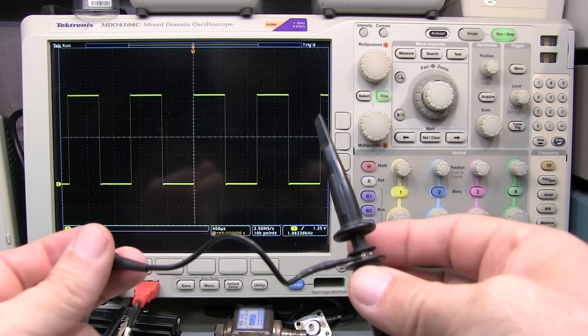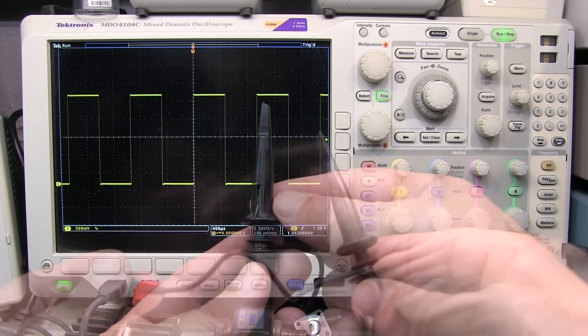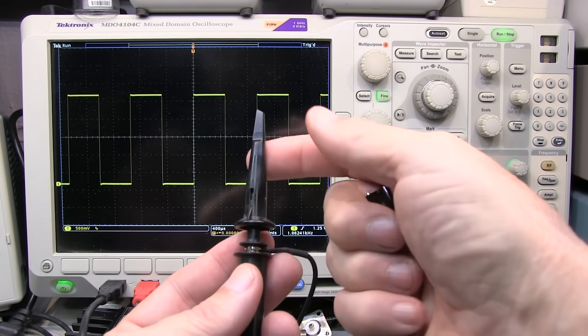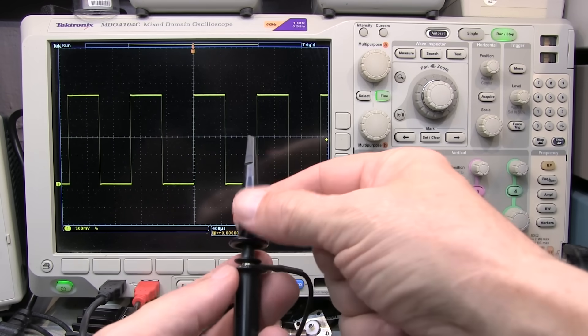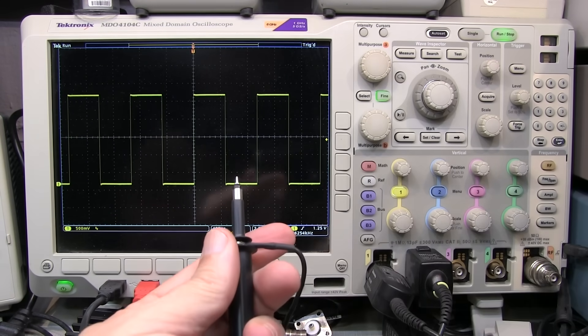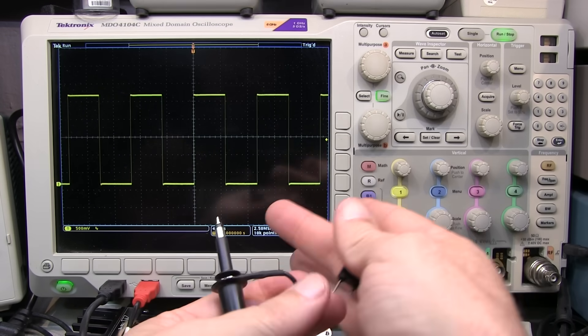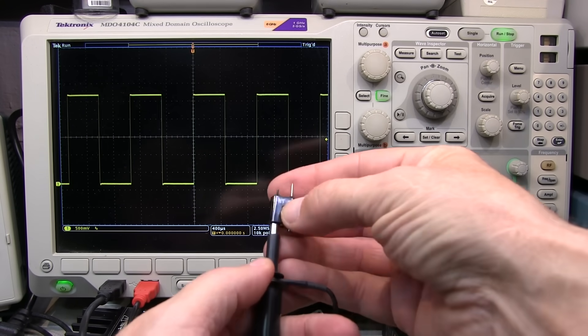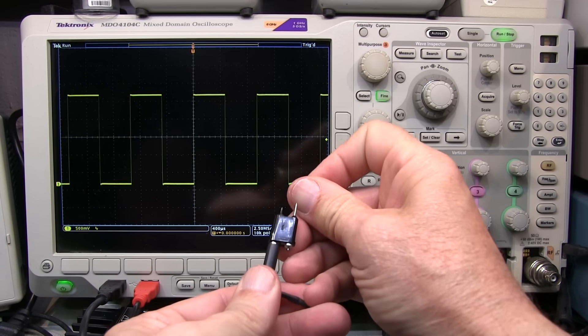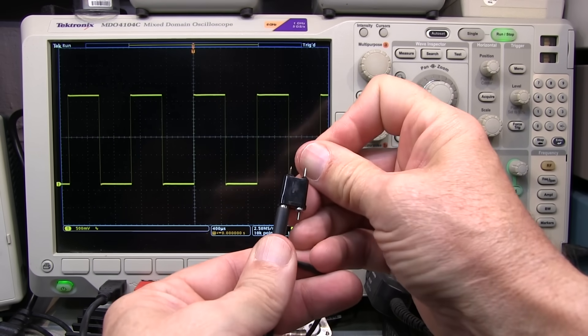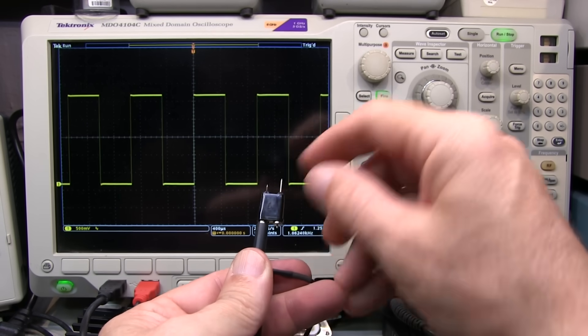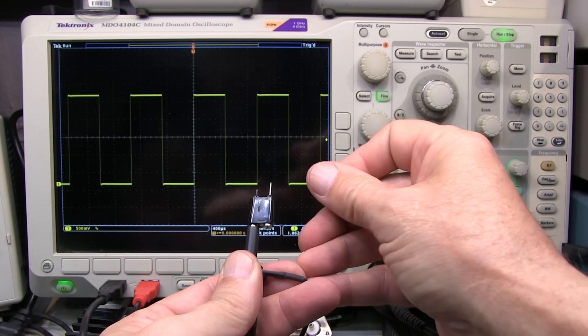Now different manufacturers and different probe types will have different adapters to allow you to use shorter ground leads. This older style probe actually has a coaxial ground ring here. And one of the available accessories was this little tip here that slipped on top of the probe tip here and has a kind of a spring-loaded ground tip here. So I've got a nice short ground loop area here, dramatically reducing that inductance.